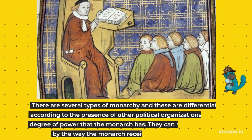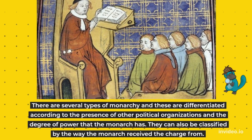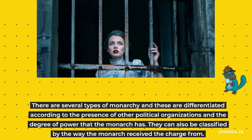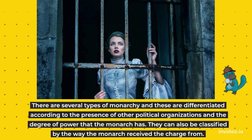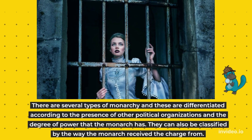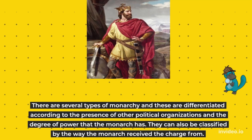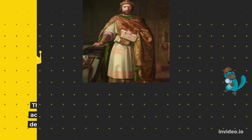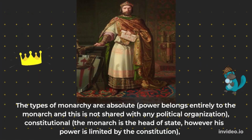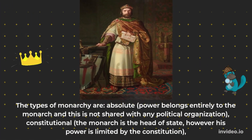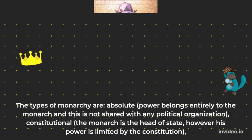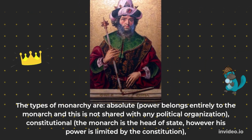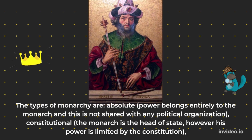Monarchy Types. There are several types of monarchy, differentiated according to the presence of other political organizations and the degree of power that the monarch holds. They can also be classified by the way the monarch received the position. The first type is Absolute monarchy, where power belongs entirely to the monarch and is not shared with any political organization.